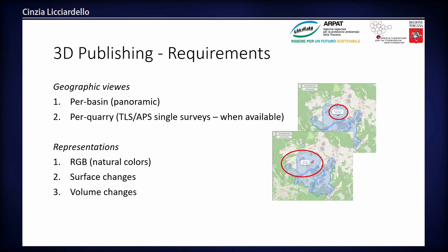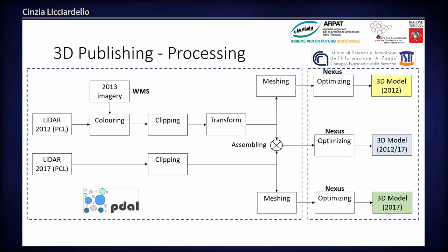Moving on to the publishing of 3D data, we have some detailed models at quarry level and some models at the basin level. We are building a 2D map to access these two kinds of data. Data processing of 3D changes can be very challenging. We used the Potree tool, which allows starting from a point cloud to obtain a mesh.